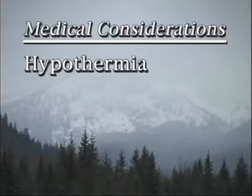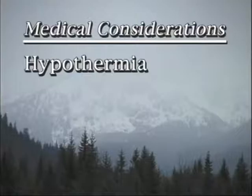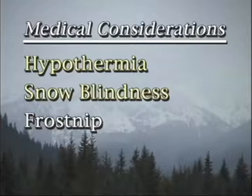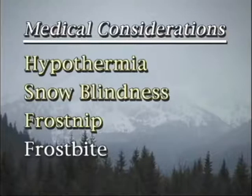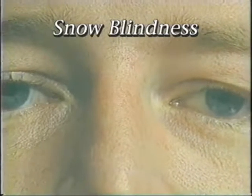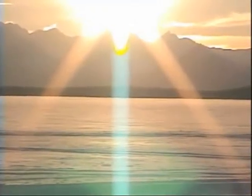Hypothermia is just one medical consideration in a cold land environment. Others include snow blindness, frost nip, and frost bite. Snow blindness is a condition where the outer layer of the eyes have been sunburned. In snow-laden areas, sunlight reflected off the snow is the main cause. The primary symptoms are redness and burning of the eyes. Headache, poor vision, pain, and swelling may also accompany the primary symptoms.